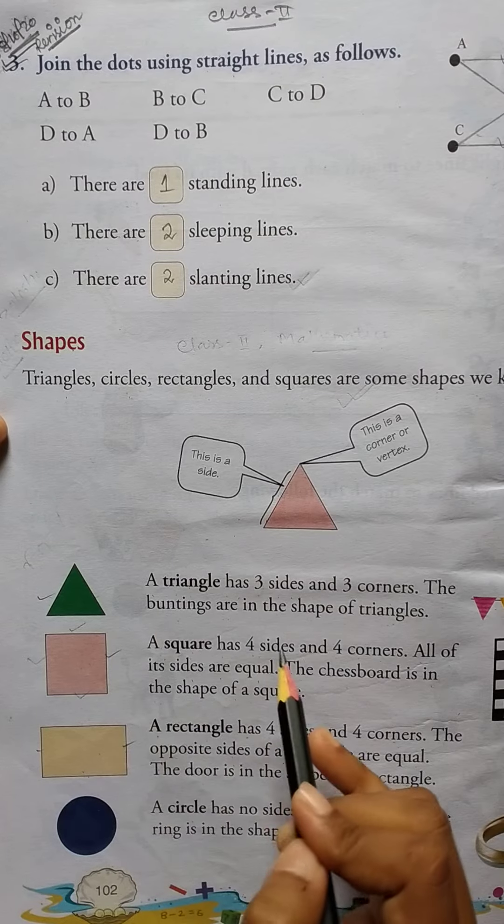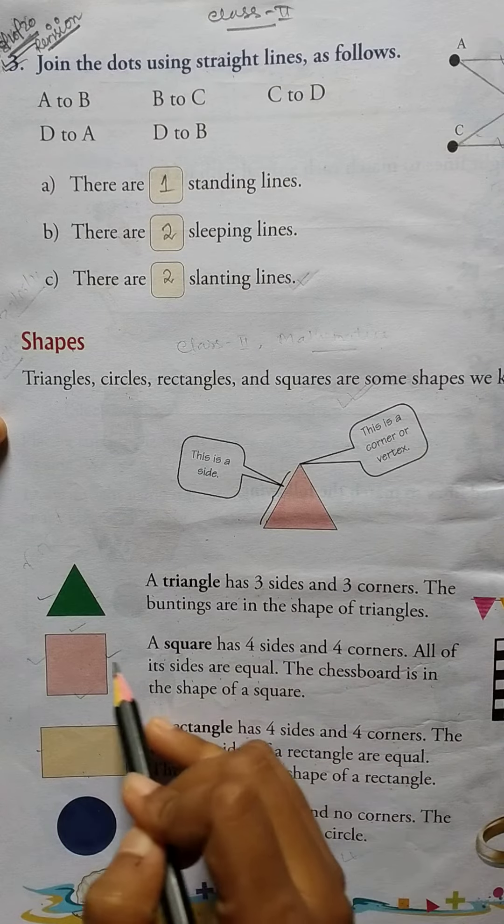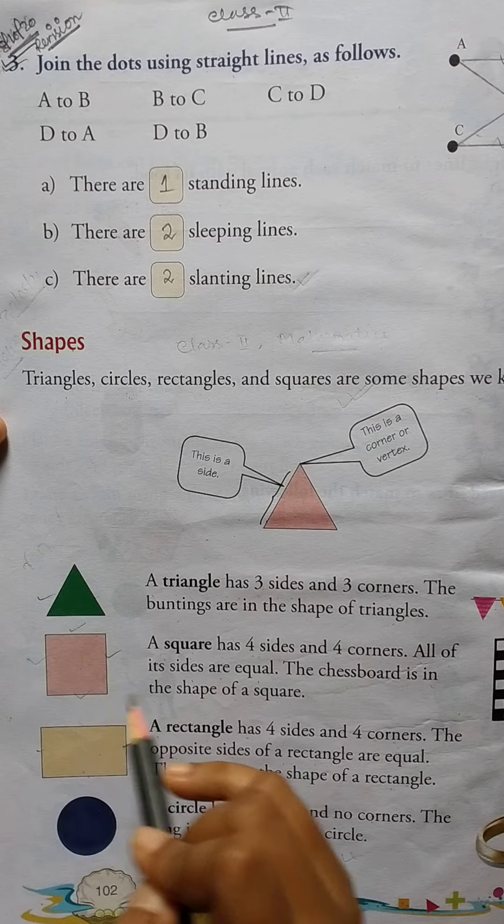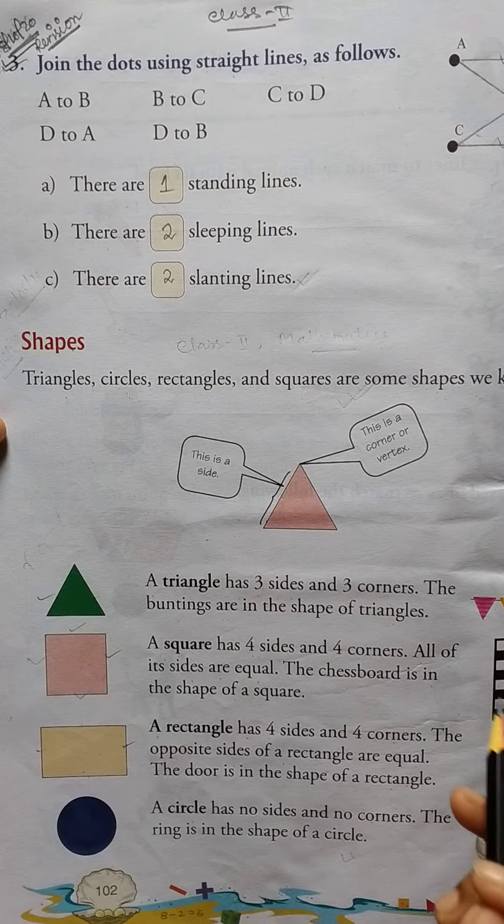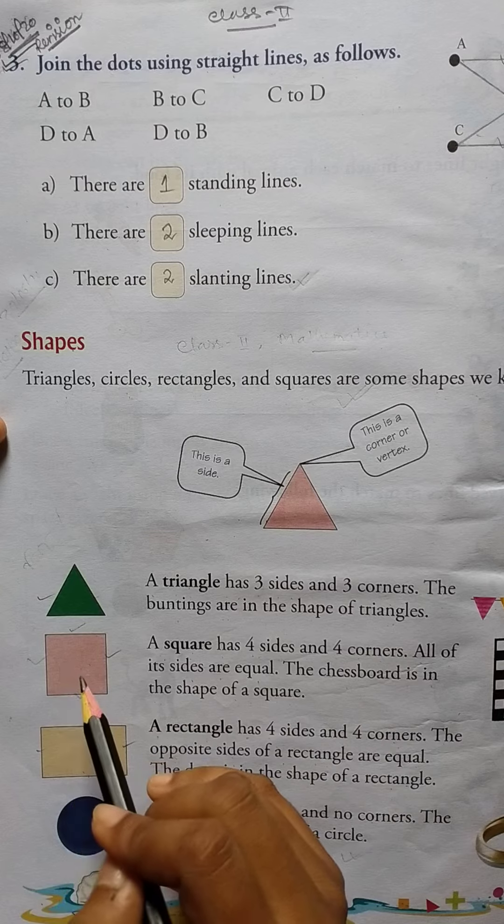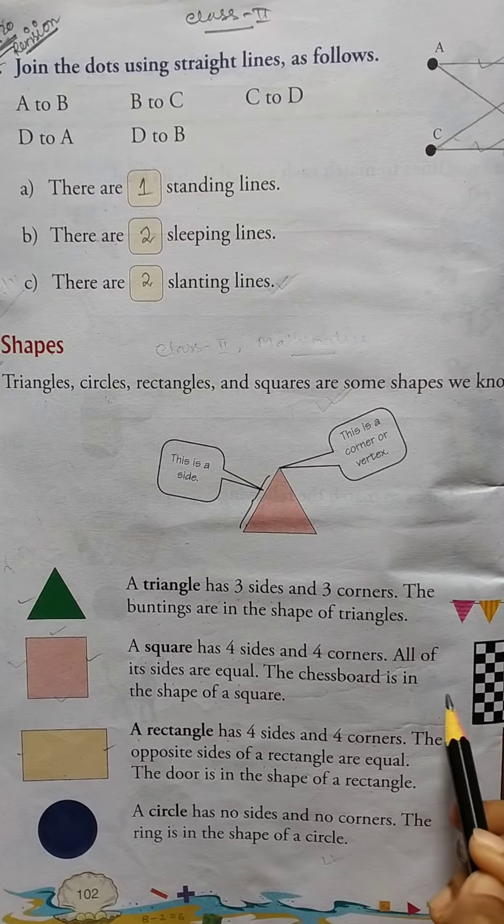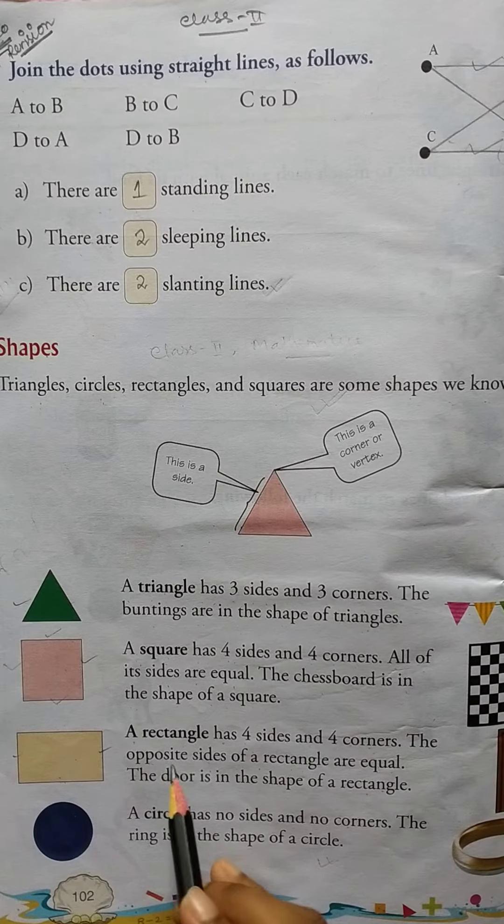Okay, then square. A square has four sides and four corners. All of its sides are equal. Okay, the chessboard is in the shape of a square.